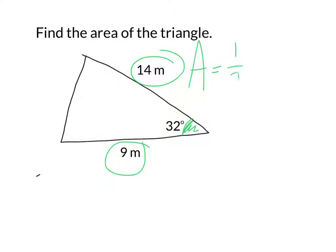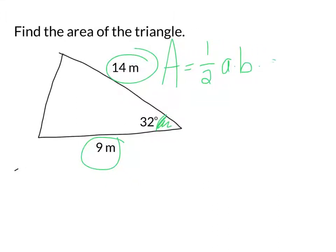The formula is one half of any two sides of the triangle times the sine of the angle between them. So if this is angle C, we'll call this side A and this side B.